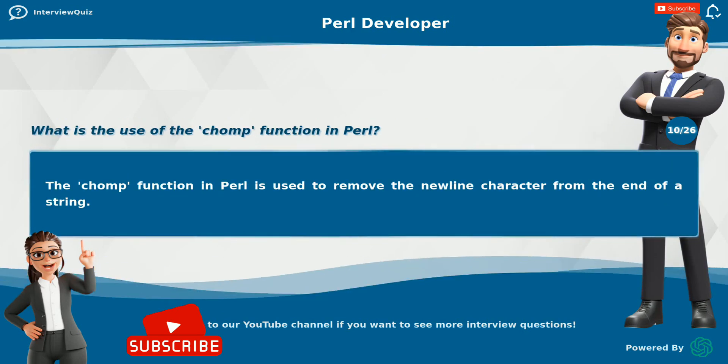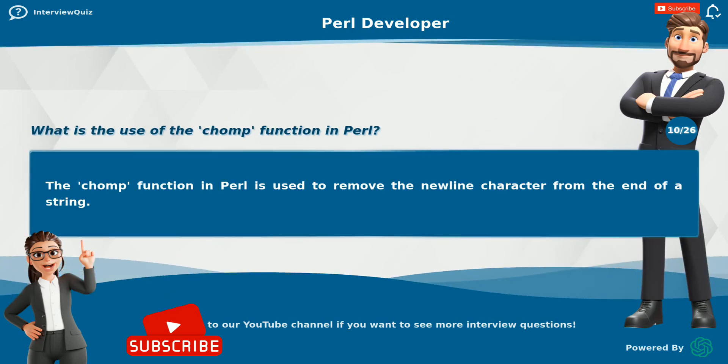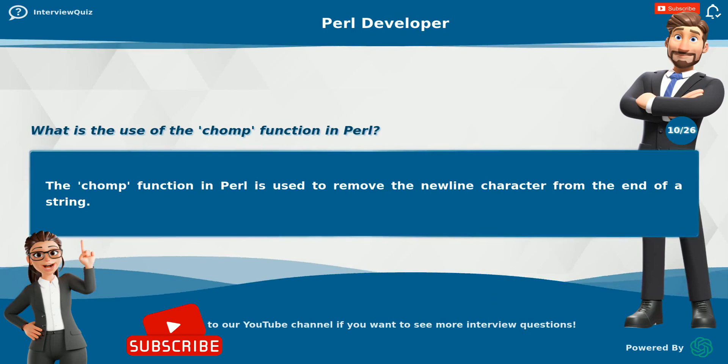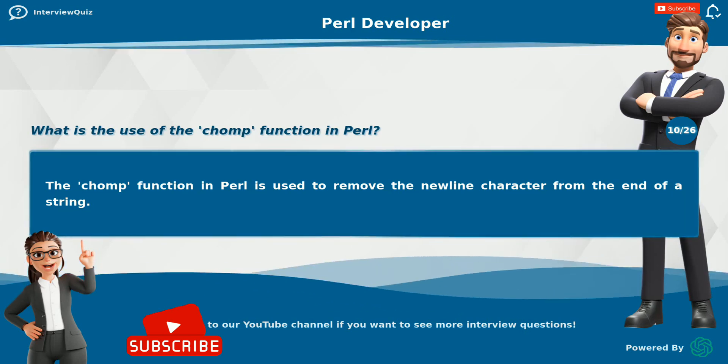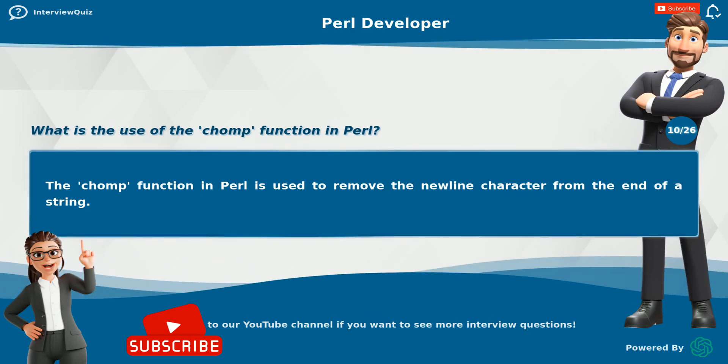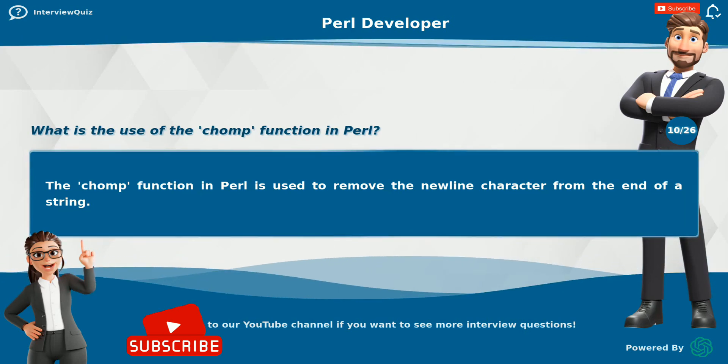What is the use of the chomp function in Perl? The chomp function in Perl is used to remove the newline character from the end of a string.